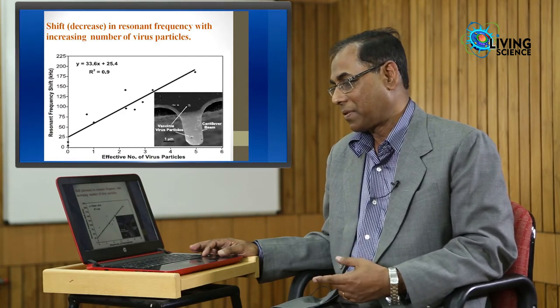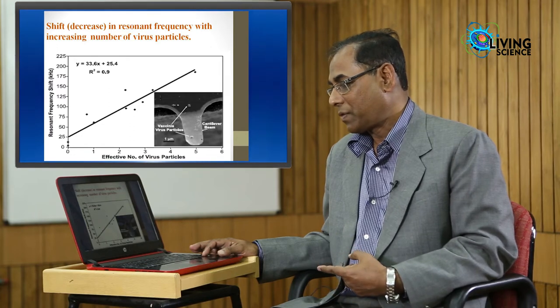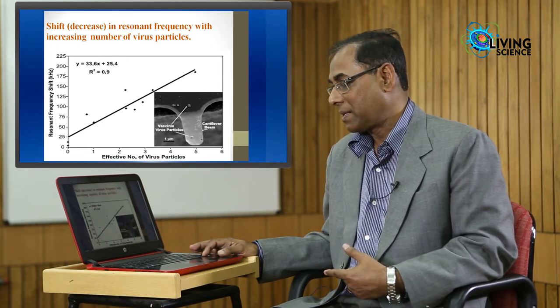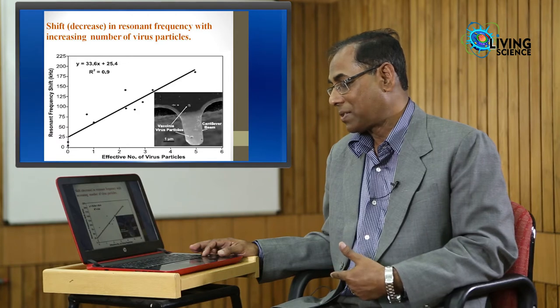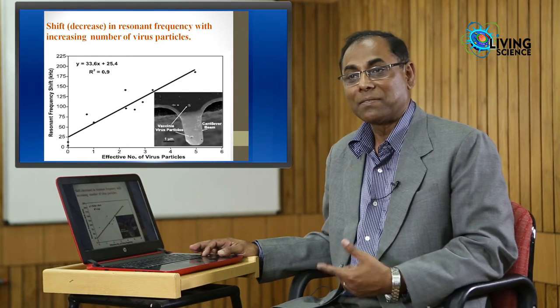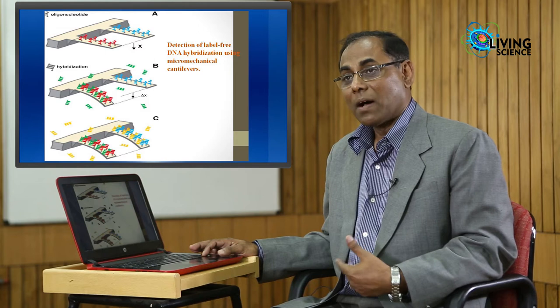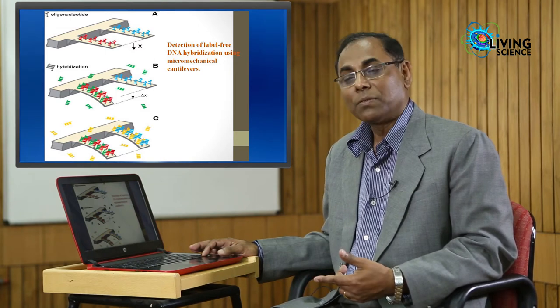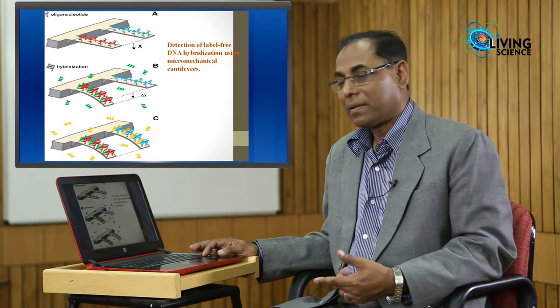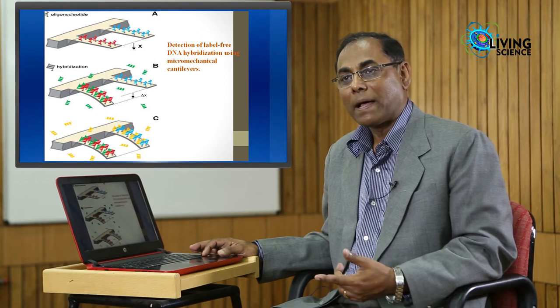In this kind of system—this is a photograph from a Nature paper—you can see vaccinia virus particles. Two are there, but the one on top of this cantilever you can detect very easily.